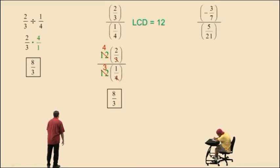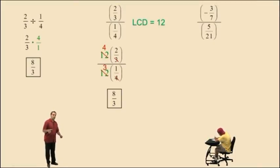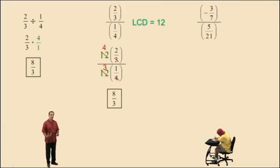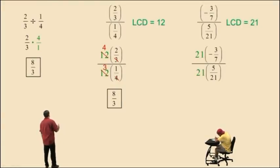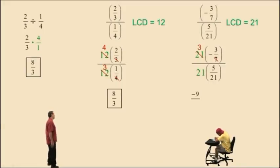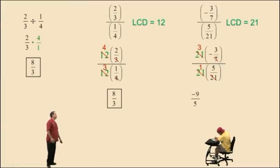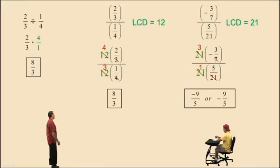Here we have negative three-sevenths divided by five over twenty-one. Let's find the lowest common denominator. Start with the largest denominator. We have three-sevenths in the numerator and five over twenty-one in the denominator. Twenty-one is the largest denominator. Does twenty-one work? Yes, it does. So let's multiply both numerator and denominator by twenty-one. Twenty-one divided by seven is three, and three times negative three is negative nine. Twenty-one divided by twenty-one is one, one times five is five. There's our answer: negative nine-fifths.